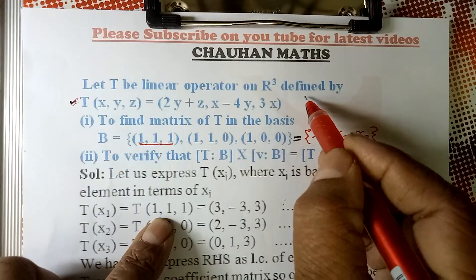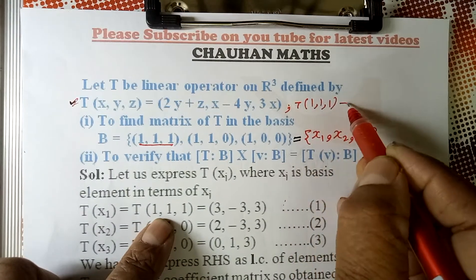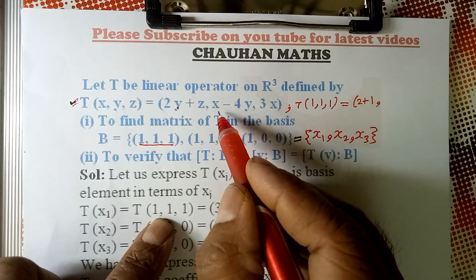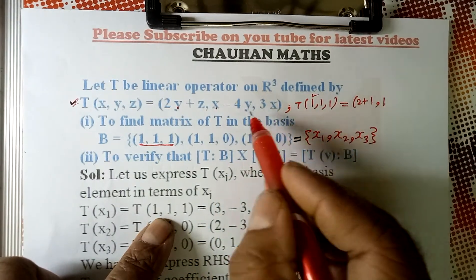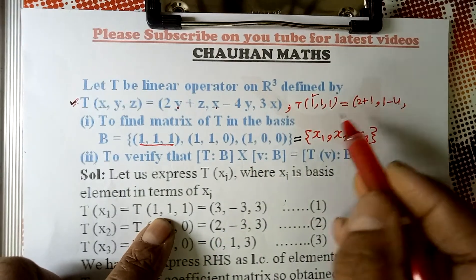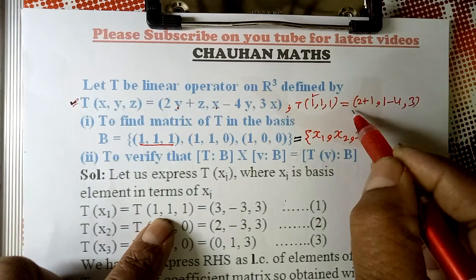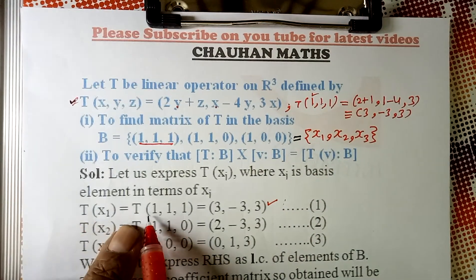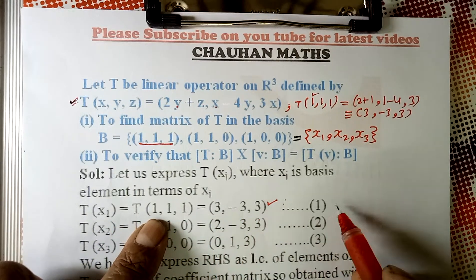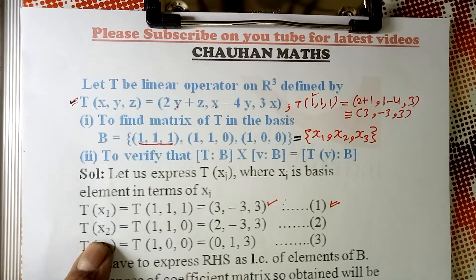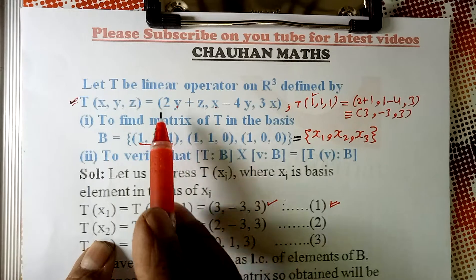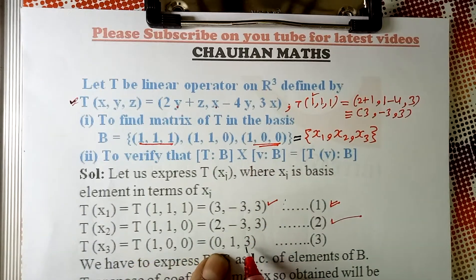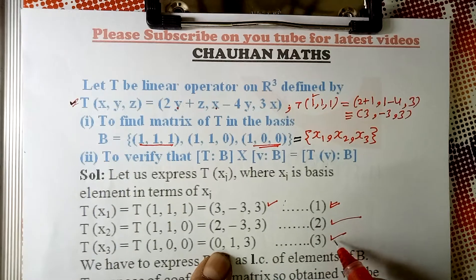To find T(1,1,1), substitute x=1, y=1, z=1 into the definition. We get 2+2+1=5 ... actually 2(1)+2(1)+1=5, then 1 minus 4(1) = minus 3, and 3(1) = 3. So T(x1) = (5, minus 3, 3). Similarly, T(x2) = T(1,1,0) gives (2 minus 3, 3) = (4, minus 3, 3). And T(x3) = T(1,0,0) can be found from equation 3 similarly using the transformation definition.